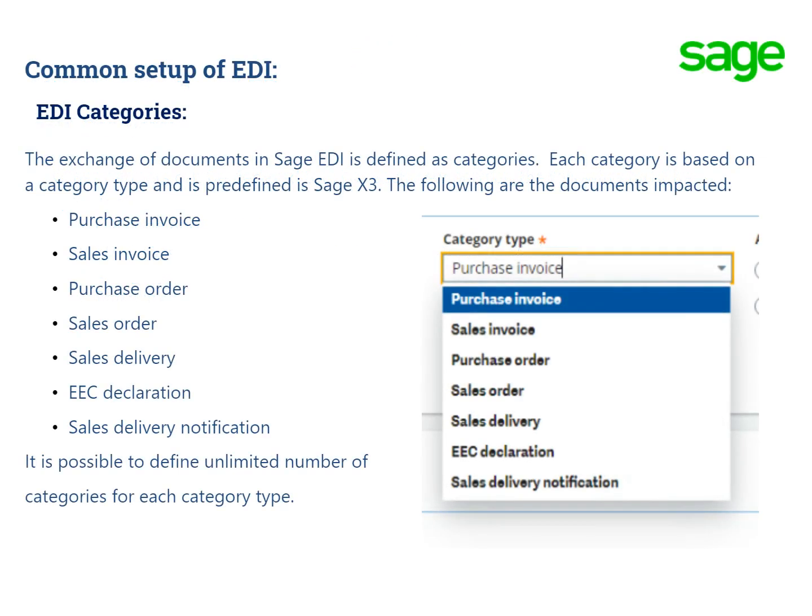The exchange of documents in SAGE EDI is defined as categories. Each category is based on a category type and is predefined in SAGE X3. The following documents are supported: purchase invoice, sales invoice, purchase order, sales order, sales delivery, and sales delivery notification. It is also possible to define an unlimited number of categories for each category type.